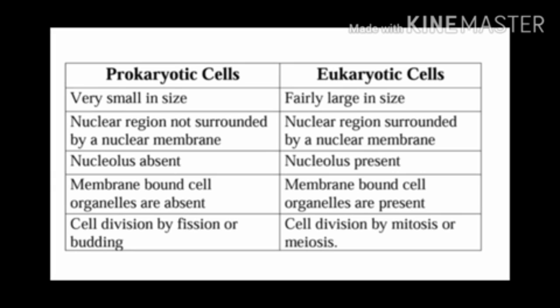The last point is that cell division in Prokaryotic cells occurs by fission or budding. In Eukaryotic cells, cell division occurs by mitosis and meiosis.